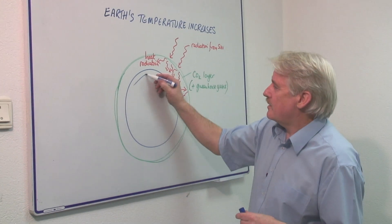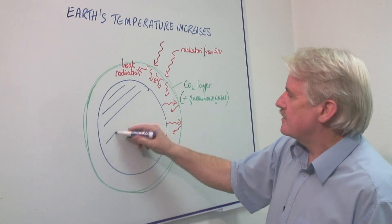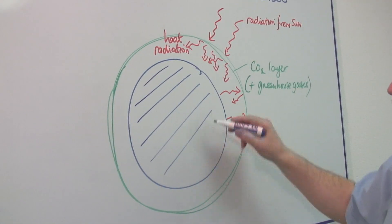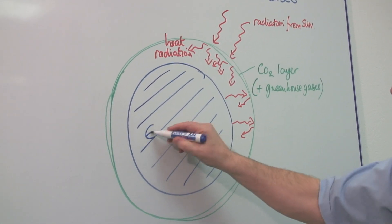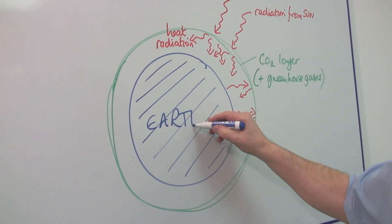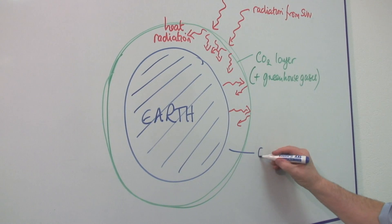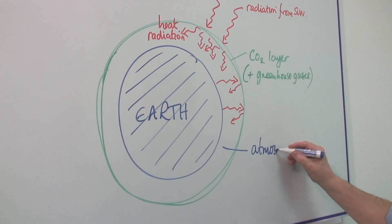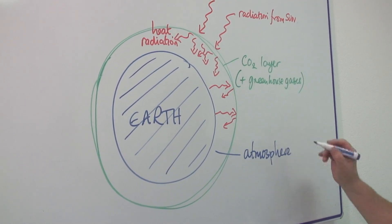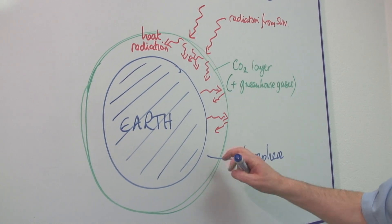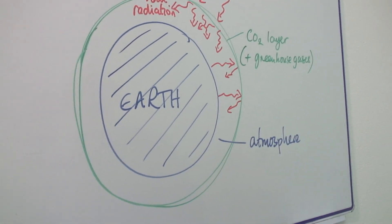The Earth is a planet, a fairly average planet, and this is the solid body of the Earth here. Above the Earth, there is the atmosphere, which contains oxygen, nitrogen, and so on, and gets thinner and thinner towards the edge.